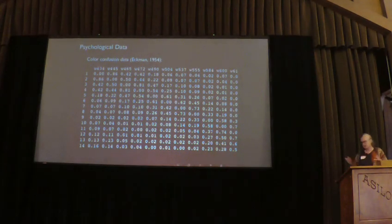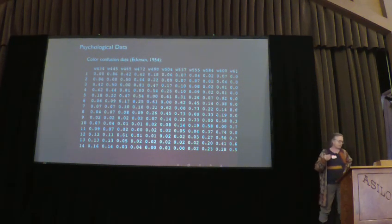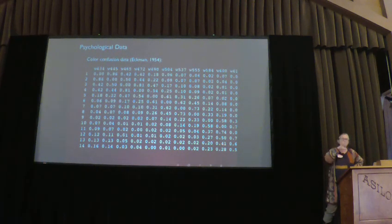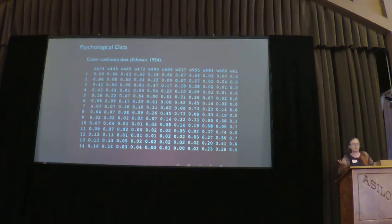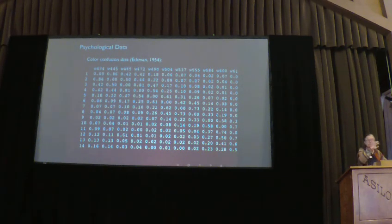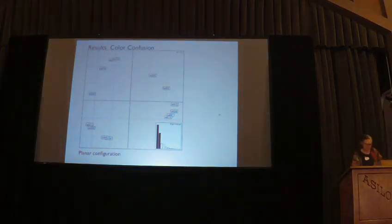MDS is done using singular value decomposition, so it's a very fast algorithm. Here's an example that became popular in the 1960s — data developed originally by Ekman for finding out how people perceive color. It's a color confusion dataset: high values mean two wavelengths of color are confused most often, so that's their similarity. To apply MDS I look at 1 minus that value as the distance. The classical MDS output is an arch, because there's an underlying one-dimensional gradient in the colors — the wavelength.